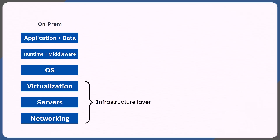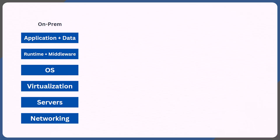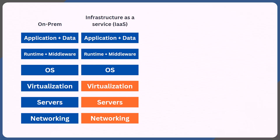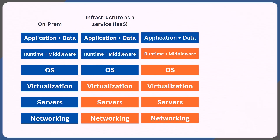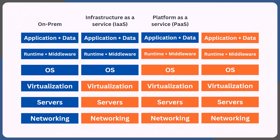I can categorize servers, compute power, and networking as the infrastructure layer. The operating system, runtime, and middleware we can categorize as the platform layer. And then finally we have the application — or from the perspective of the end user, it's a software layer. If a third-party company provides infrastructure, they're providing infrastructure as a service or IaaS. If a company provides both infrastructure and platform, we call it platform as a service or PaaS. And if a company provides everything including application and data, they're essentially providing software as a service or SaaS.